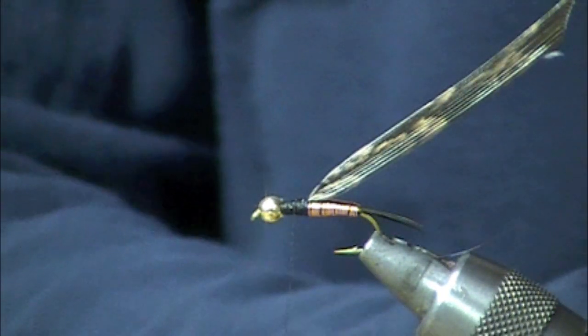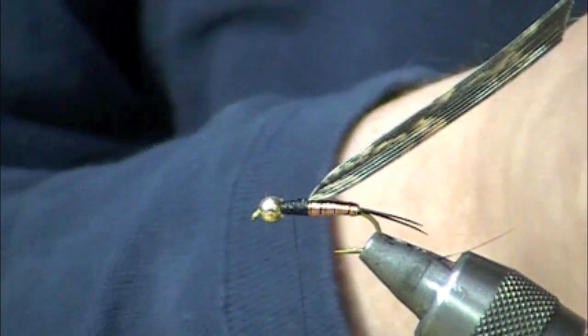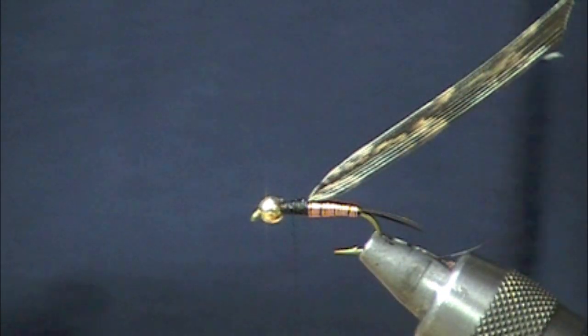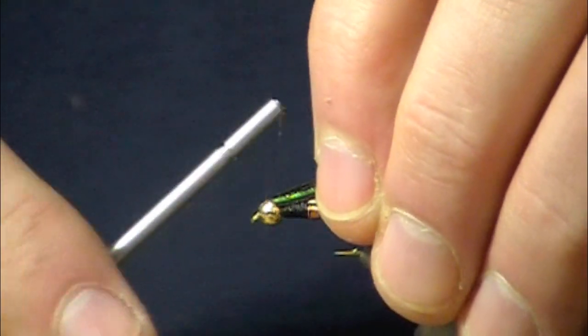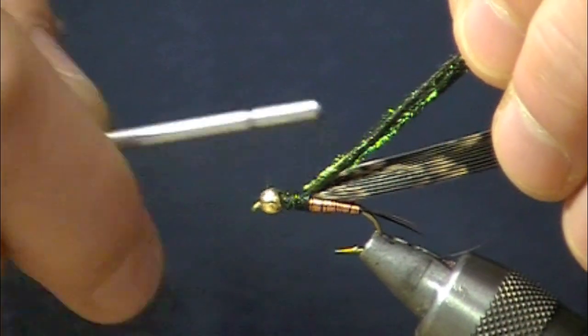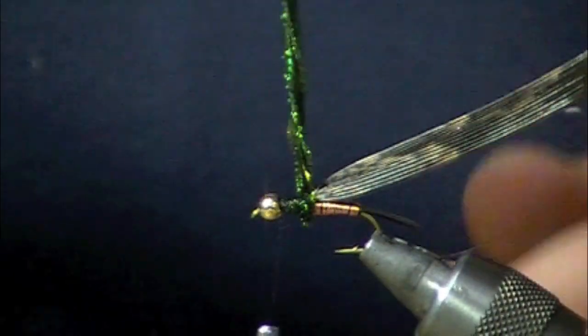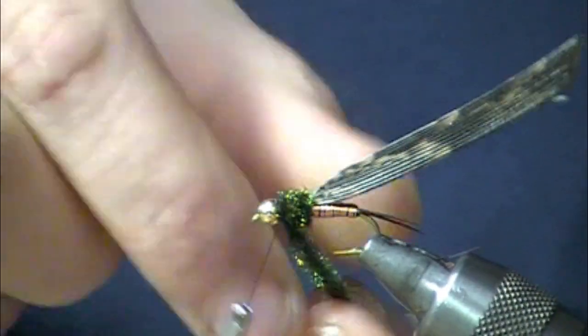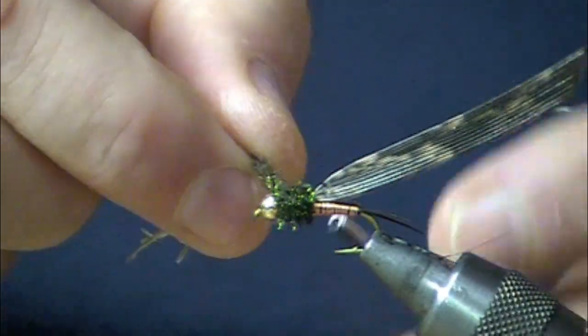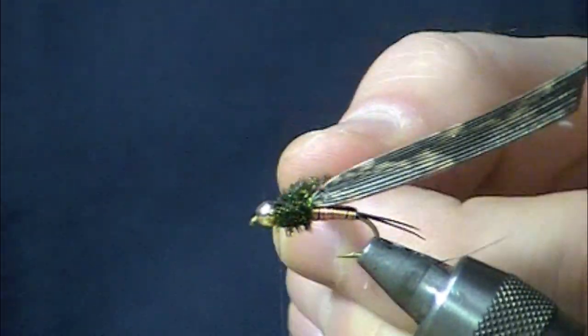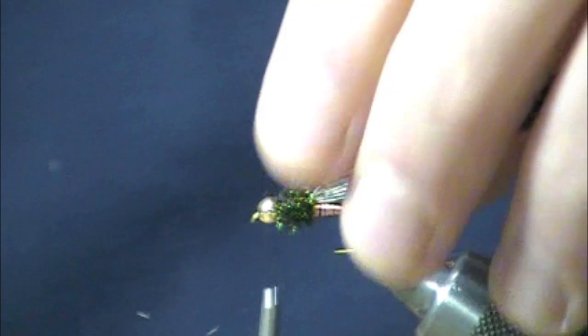Next thing I'm going to do is I'm going to take about six strands of peacock hurl. I like to trim off my tips just to give myself a nice even playing field. Just give those a little bit of a twist. Build up a nice shoulder, thorax. Snip off the excess.